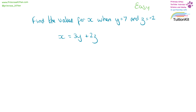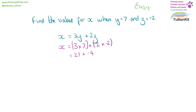Find the value for x when y equals seven and z equals minus two. So x equals three times y, which is seven, plus two times z, which is minus two. Three times seven equals 21, plus two times minus two, that is minus four. Twenty-one minus four is 17.